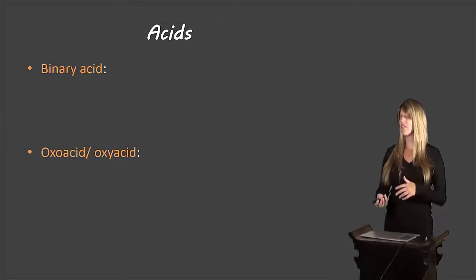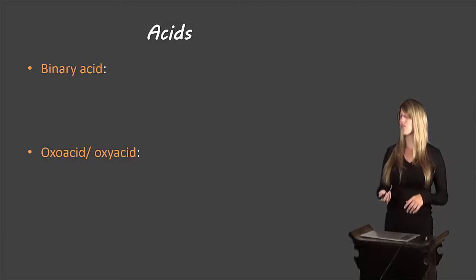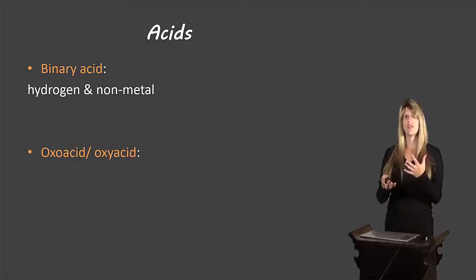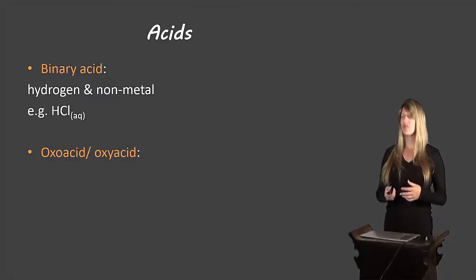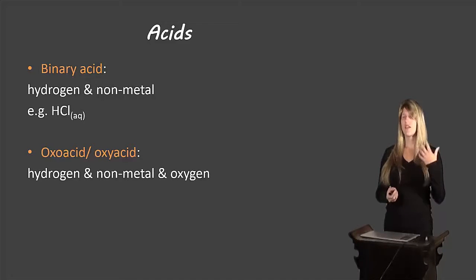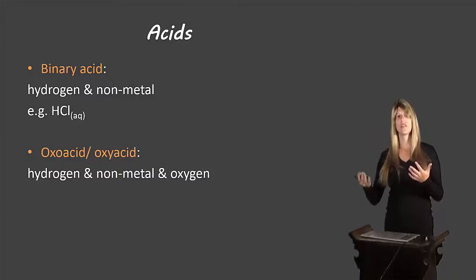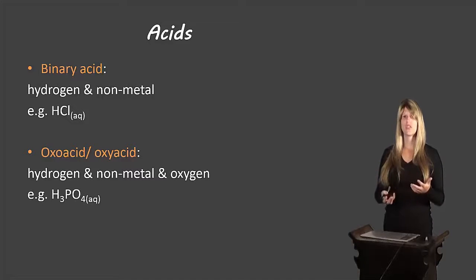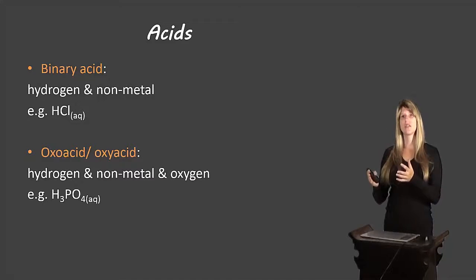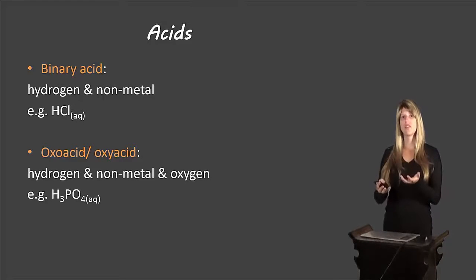Let's talk about the difference between a binary acid and an oxoacid — sometimes oxoacids are also referred to as oxyacids. A binary acid has hydrogen and a non-metal; for example, HCl — hydrogen and the non-metal chlorine. Oxoacids have hydrogen, a non-metal, and also oxygen. An example would be H3PO4. We can recognize the non-metal and oxygen from our polyatomic compounds — PO4 is phosphate — so we might recognize a lot of oxoacids from the polyatomics list.